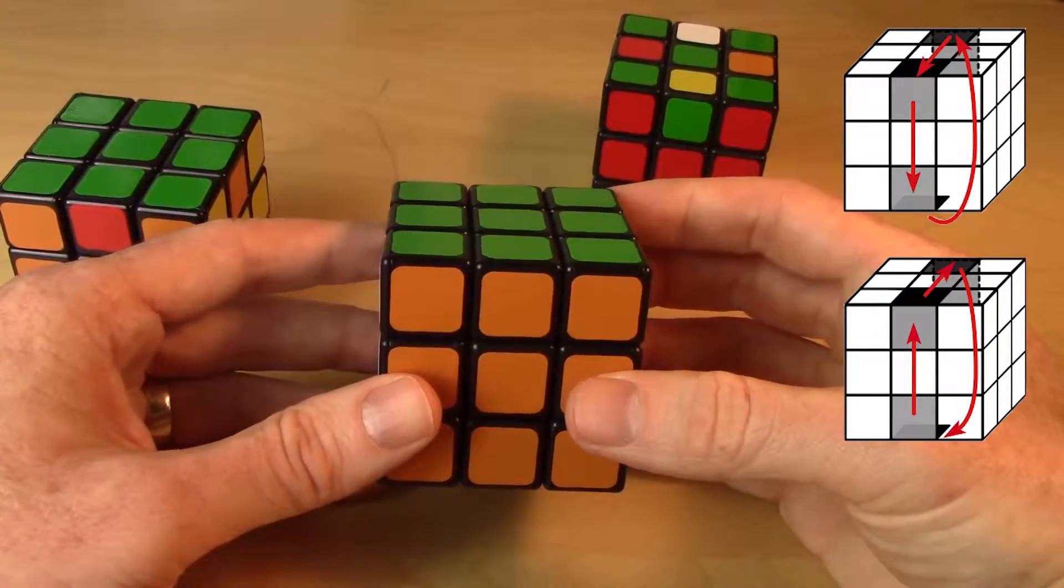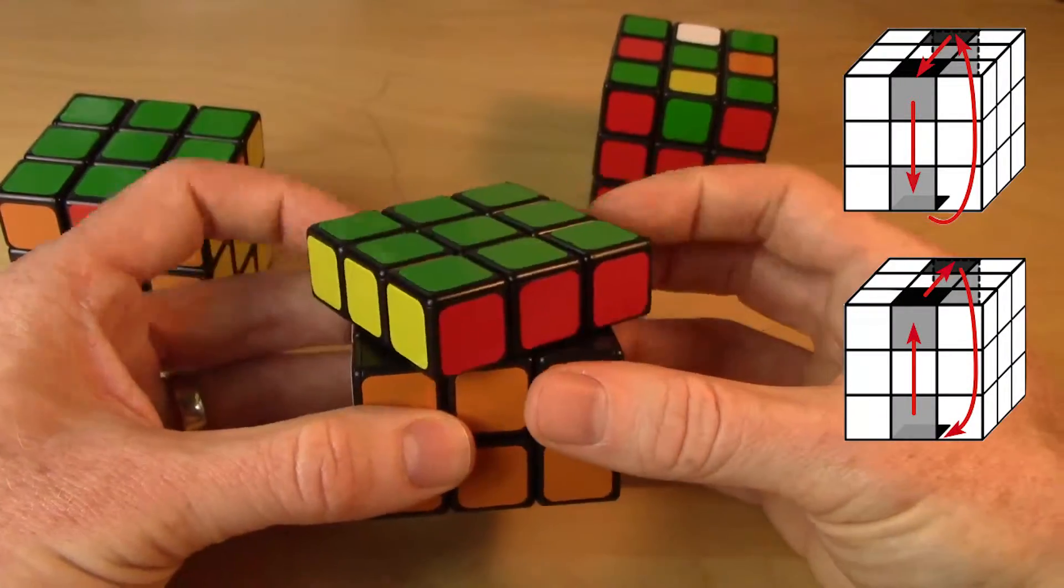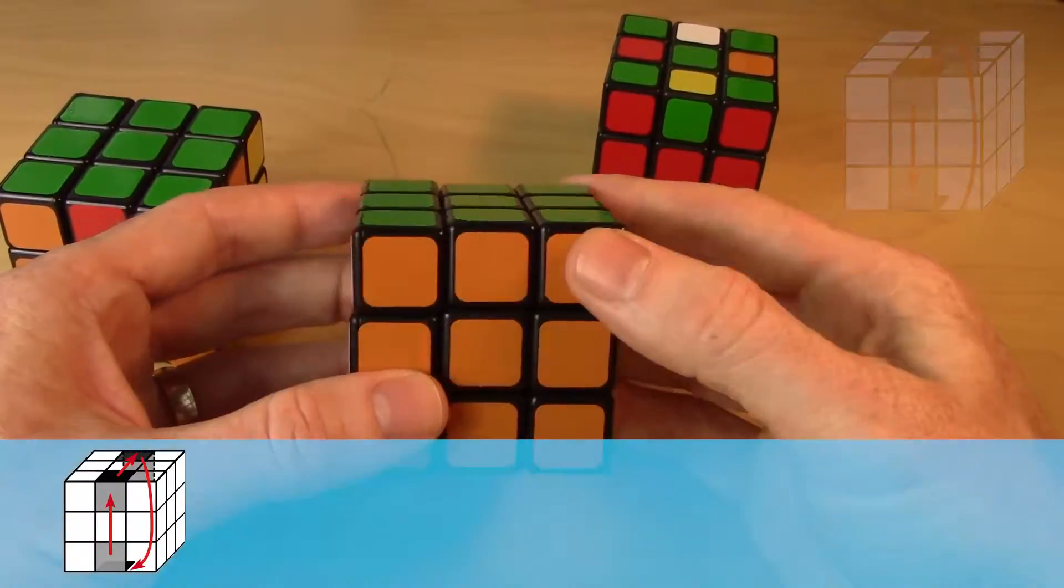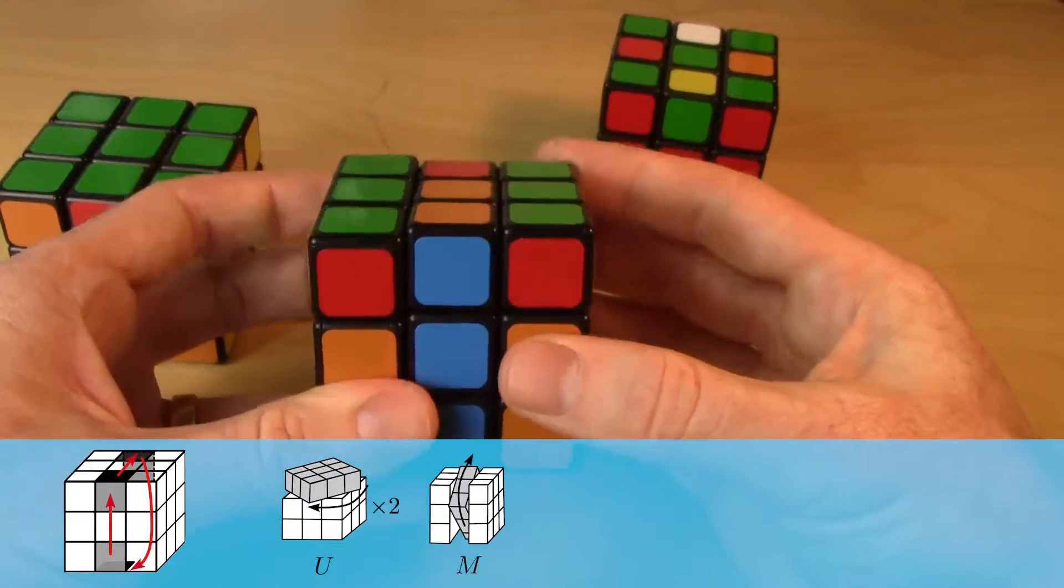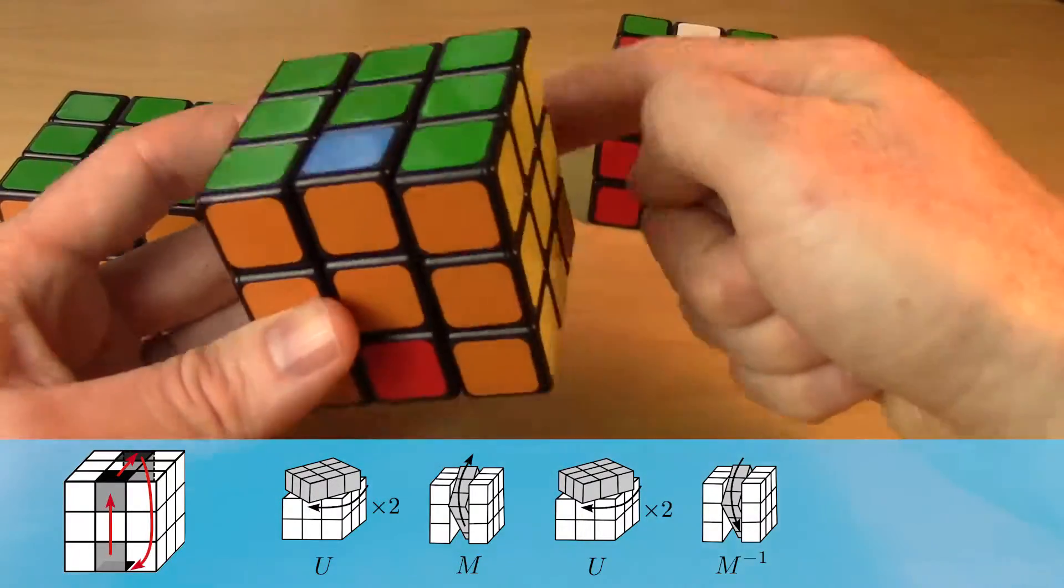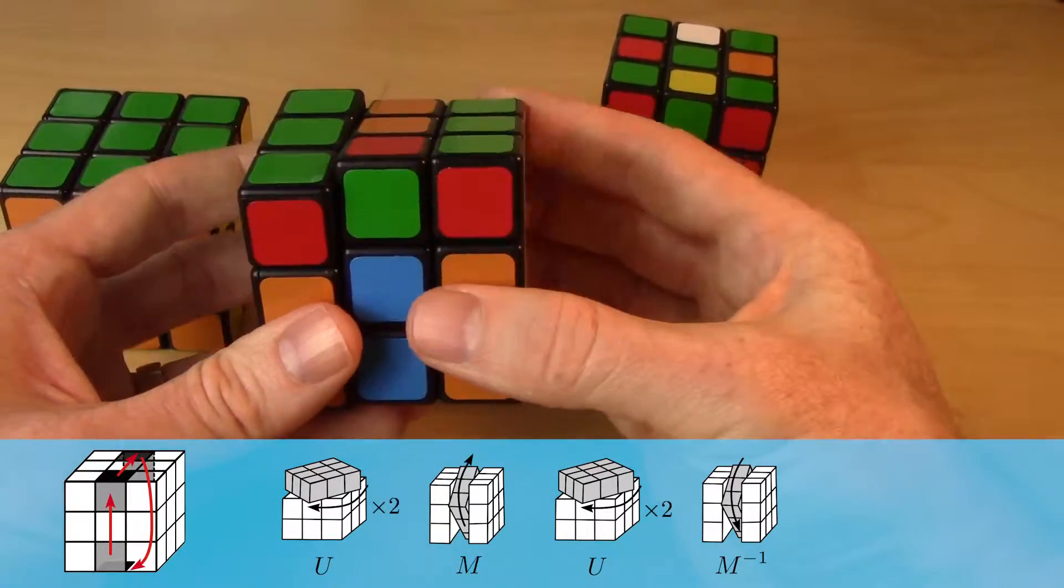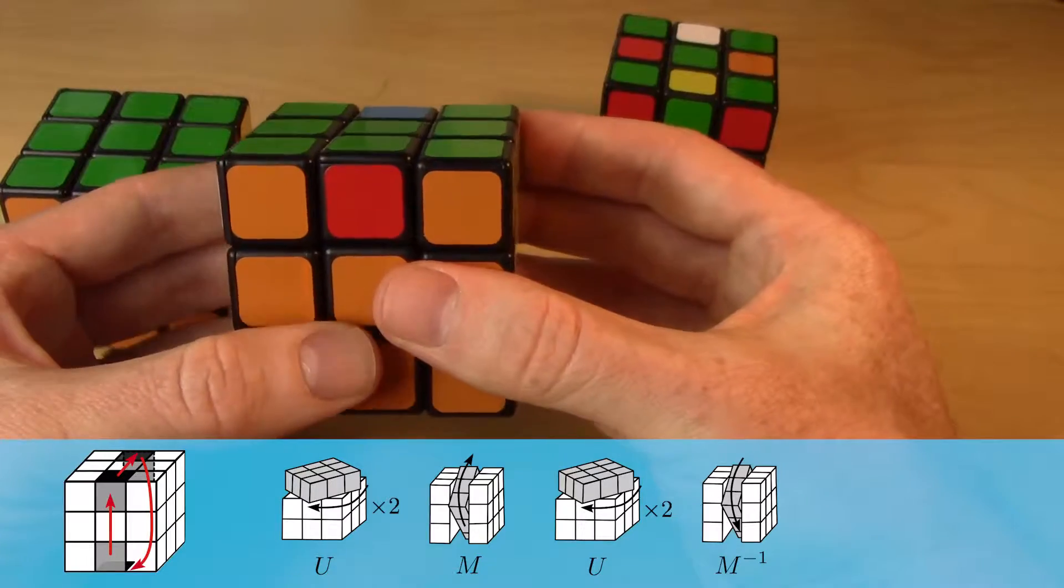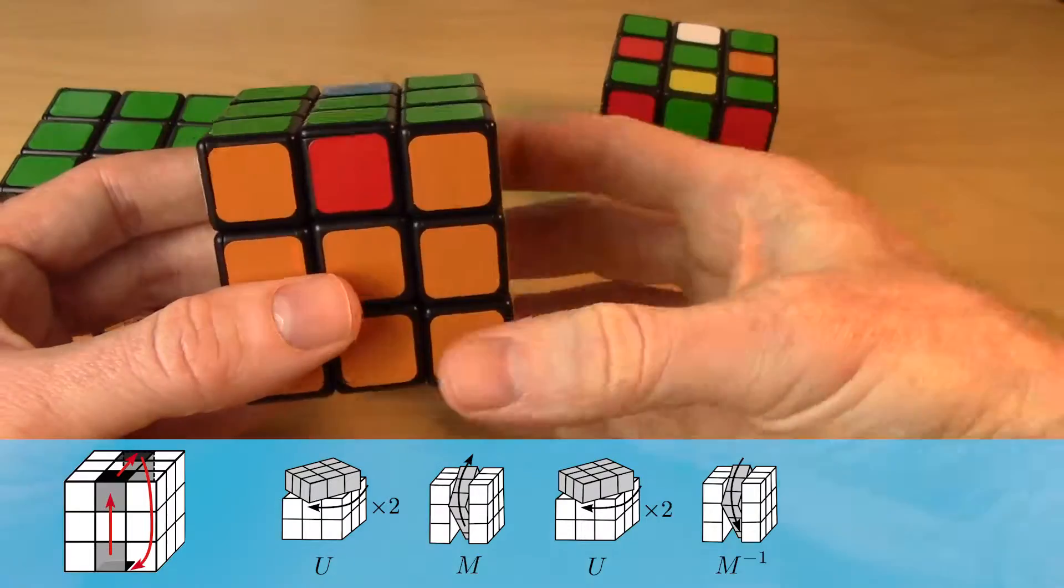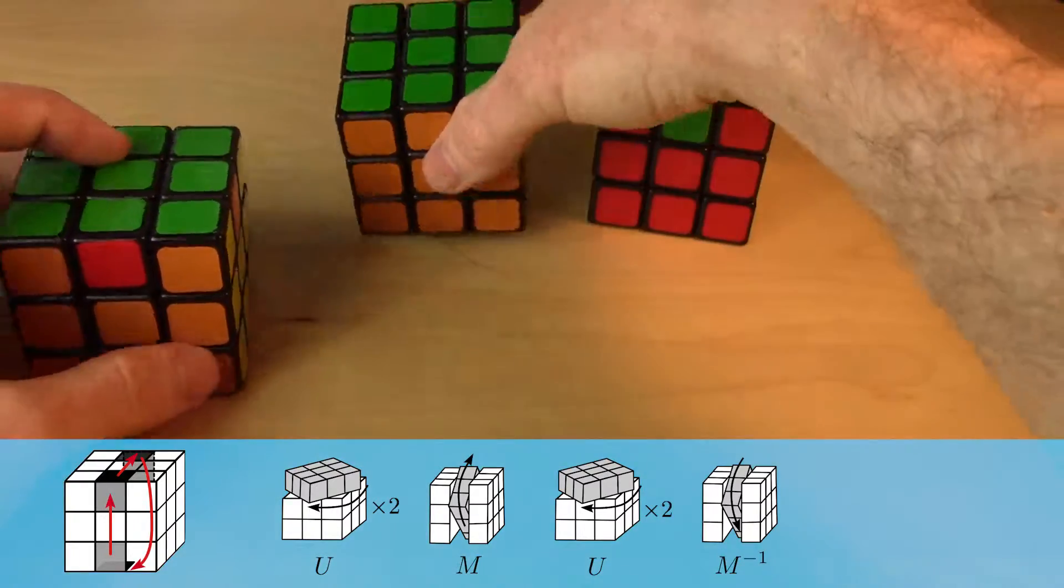Well we can do that move sequence in reverse. So instead of doing M and then U twice and then M inverse and then U twice again, we start with the U move. We'll go U twice and then M and then U twice and then M inverse. And that moved this piece around. We'll do it again, and again, that advanced it once more. We'll do it one more time and that restored them all.